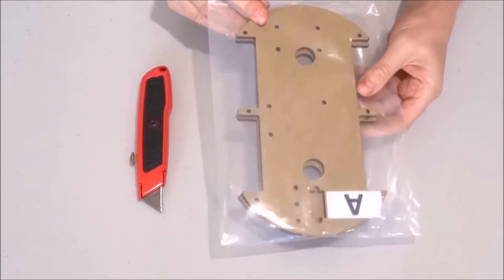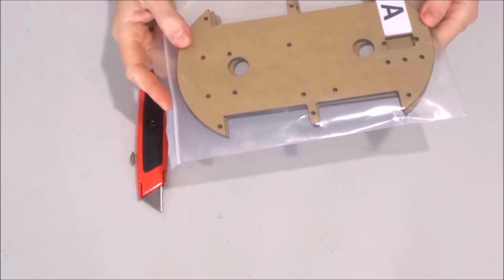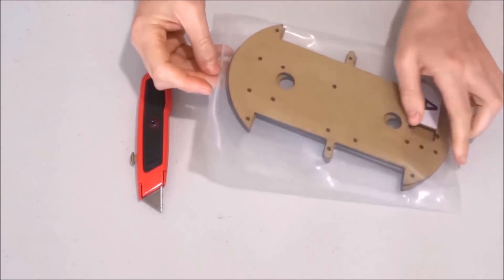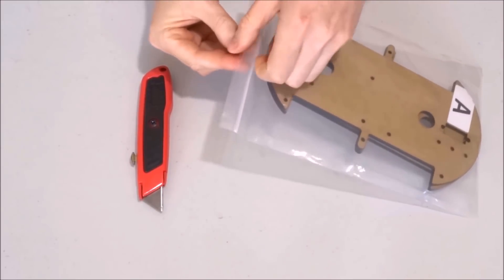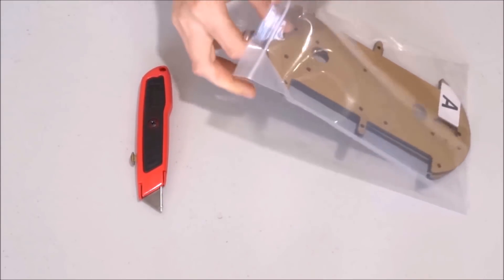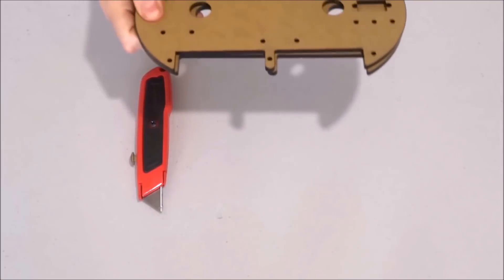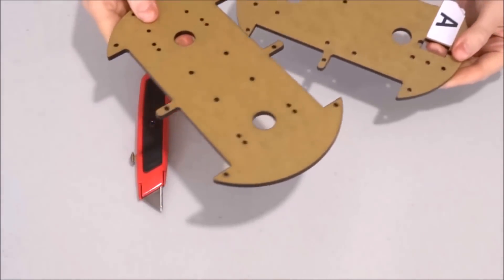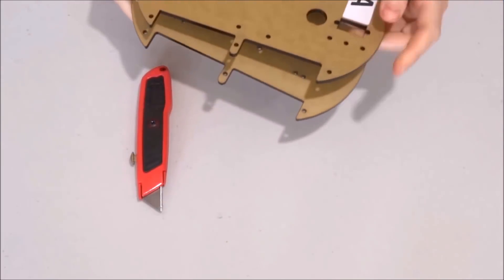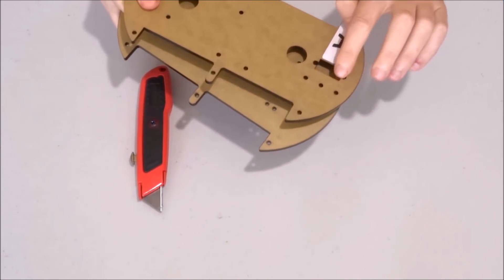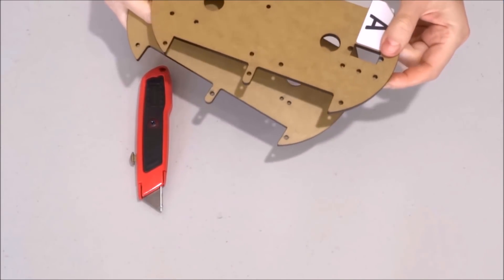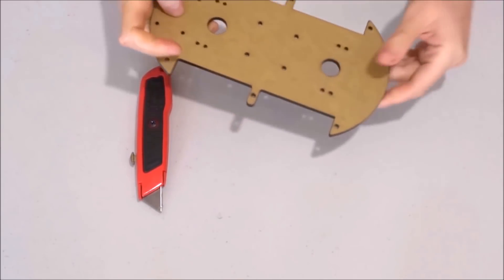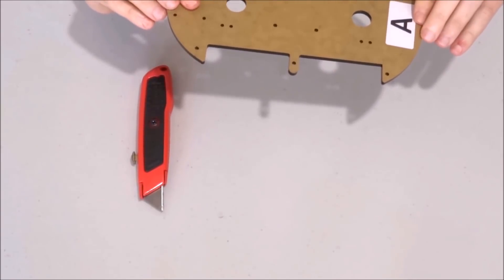We will need the bag that contains the two layers of the chassis. Take them out of the bag. There are two of them. This one that has the square hole is the upper layer. We don't need it for now. We will work with this one.